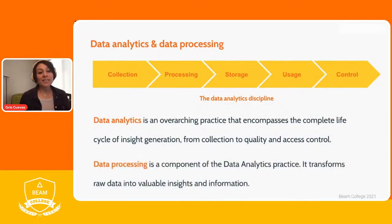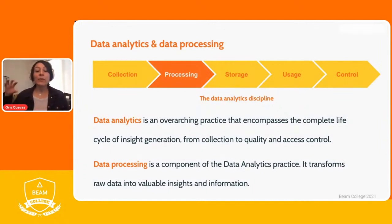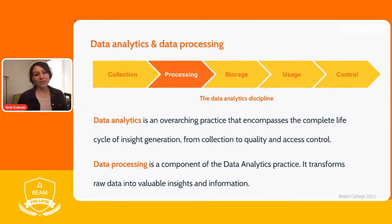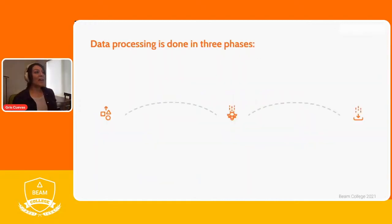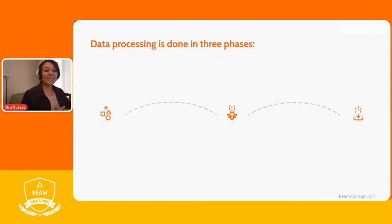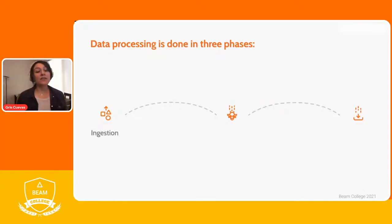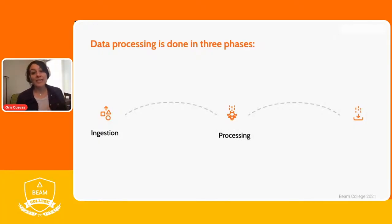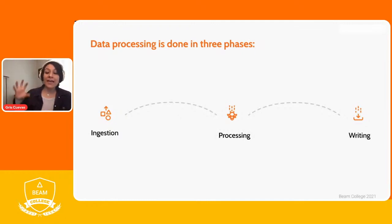To summarize: data analytics is the overarching practice encompassing the entire cycle, while data processing is the specific point where we read data from where we are collecting it and produce new insights and valuable information — and this is where Apache Beam comes into the picture. Data processing happens in three phases: data ingestion, then processing or transformation from raw data into valuable insights, and then writing or storing those insights.